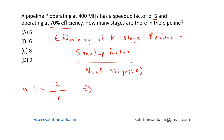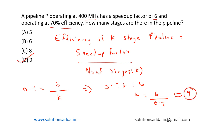This gives us 0.7K = 6, so K = 6 / 0.7, which is approximately equal to 9. Therefore, the number of stages is 9, and Option D is the right choice.